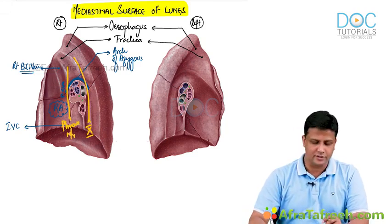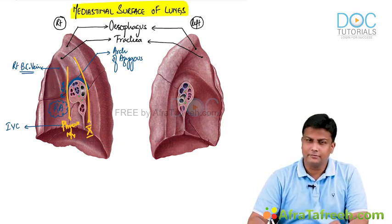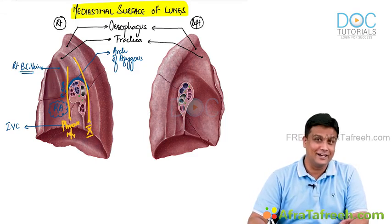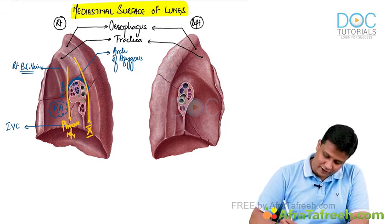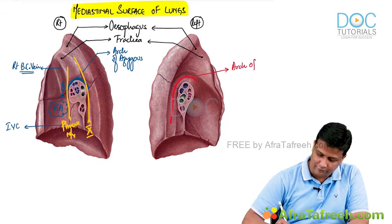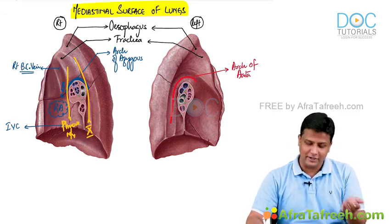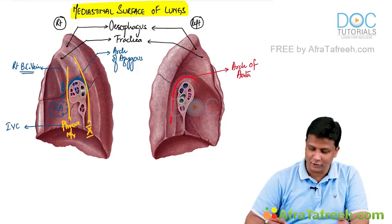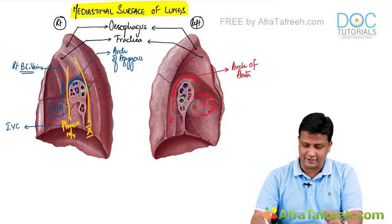That covers all structures related to the mediastinal surface of the right lung. For the left lung, esophagus and trachea are already identified. Recalling from the root of the left lung — above the root is the arch of aorta. So this impression on the left lung represents the arch of aorta. It is coming from the heart — specifically the left ventricle — as ascending aorta, then arch of aorta, then descending aorta. The big impression below is the cardiac area representing the left ventricle.